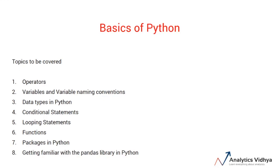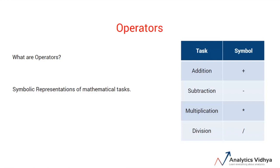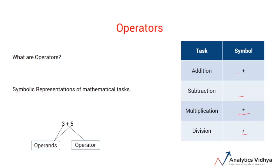So let's get started with our first topic, that is operators. What are operators? In simplistic terms, operators are symbolic representations of mathematical tasks, or in other words, this is how computers recognize what mathematical tasks to perform. Here are some mathematical tasks such as addition and subtraction along with their symbols. For example, the operator for addition is plus while the operator for subtraction is minus. Similarly, for multiplication it is asterisk and for division it is a slash sign. Let's see a simple operation of addition: it is represented as 3 plus 5, where 3 and 5 are called operands and plus is the operator which symbolizes addition.